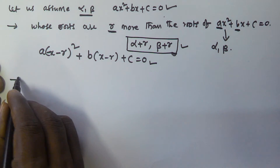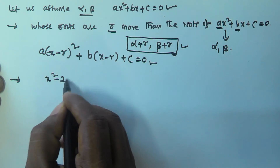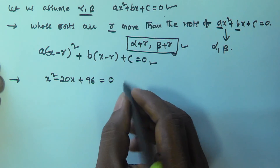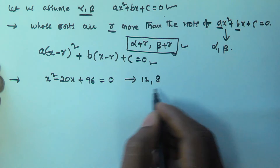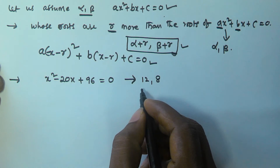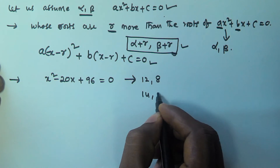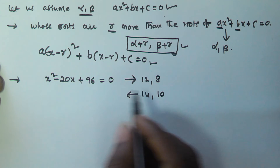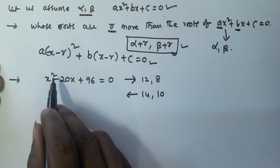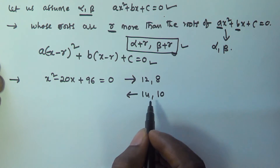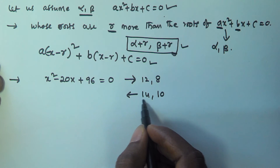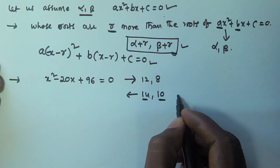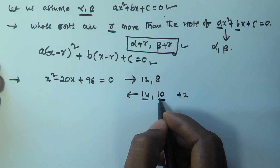For example, we are given x² - 20x + 96 = 0. The roots of this equation are 12 and 8. We have to find the equation whose roots are 14 and 10. If you observe, the new roots are each 2 more than the original roots: 12 plus 2 is 14, and 8 plus 2 is 10. So the value of r is 2.